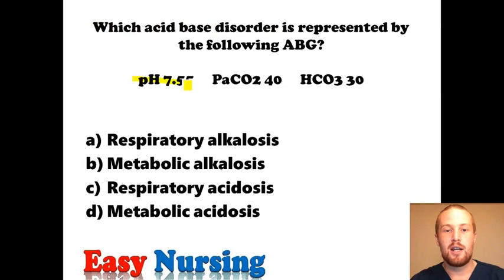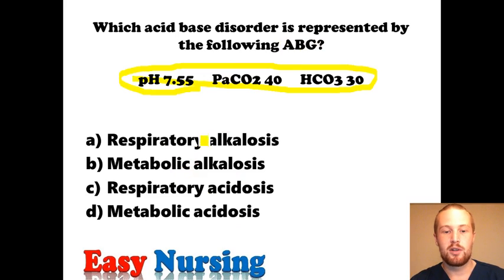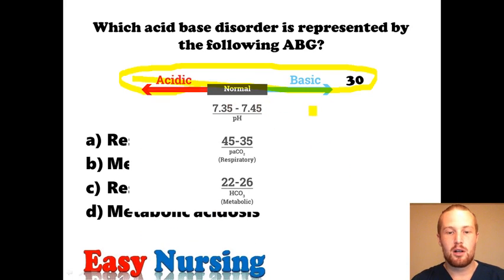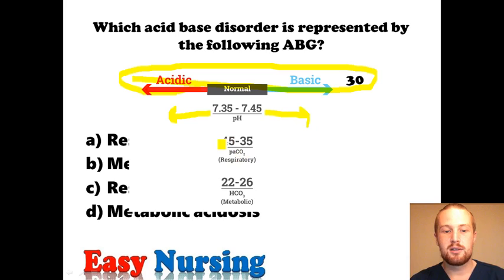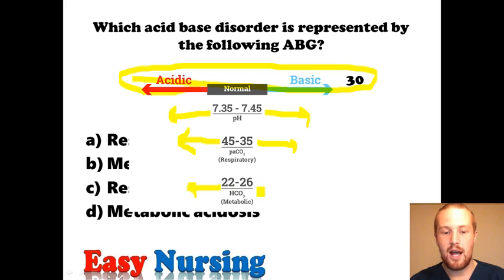This first question looks like we're given an ABG and need to find out what disorder it is — whether it's respiratory or metabolic, and whether it's alkalosis or acidosis. First thing you should do is write this on your test: acidic is pH 7.35 or lower, and alkalotic or basic is 7.45 or higher. Carbon dioxide — the more you have, the more acidic; a low CO2 would be alkalotic. Bicarb — low levels are acidic, and high levels are basic since it helps absorb those acids.